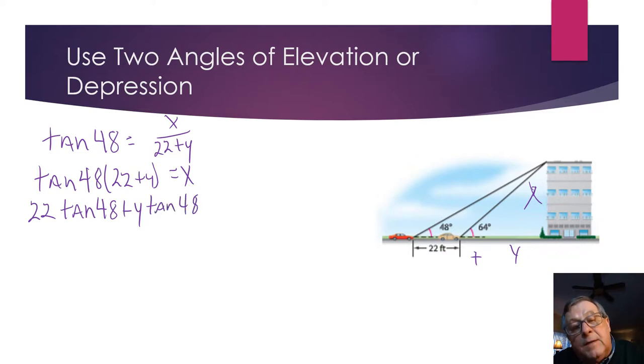And then substituting for X, what we solved for in the first triangle, which was Y times the tangent of 64. So let's solve for Y first, and then we'll find how tall this building is. Now, I've got two like terms here in the fact that I've got a variable right here. So let's subtract Y times the tangent of 48 from both sides.